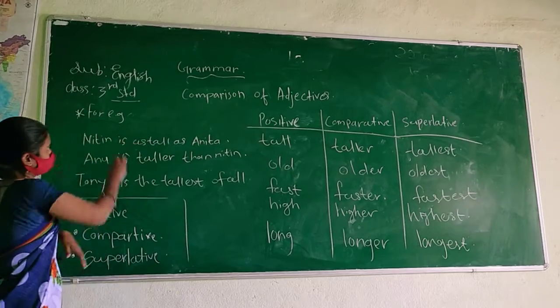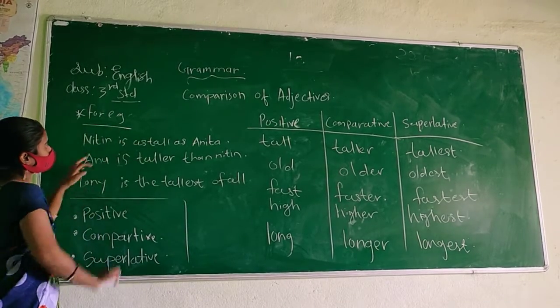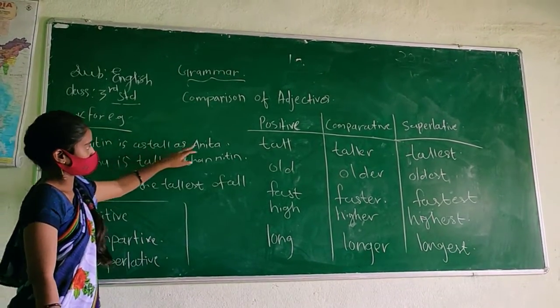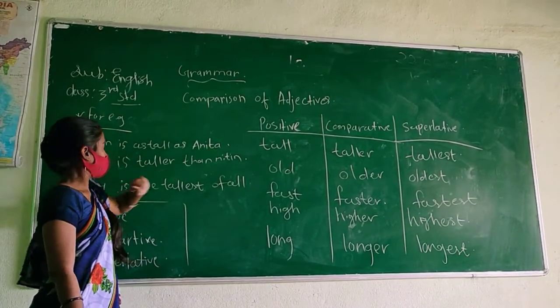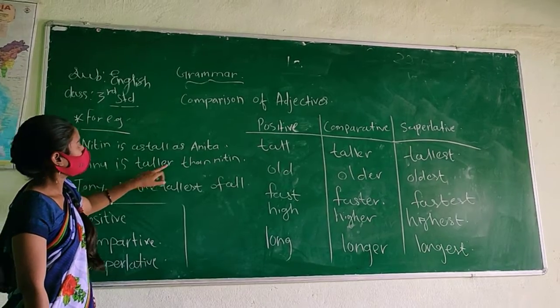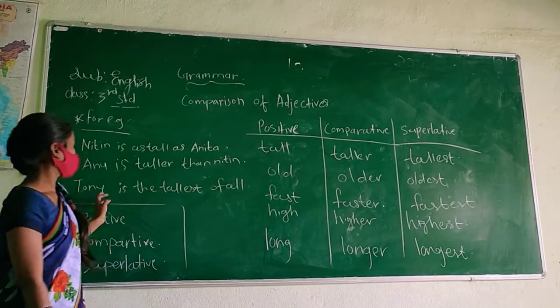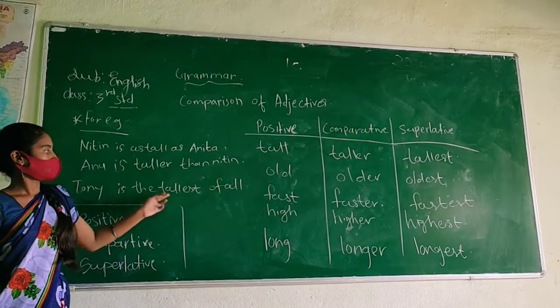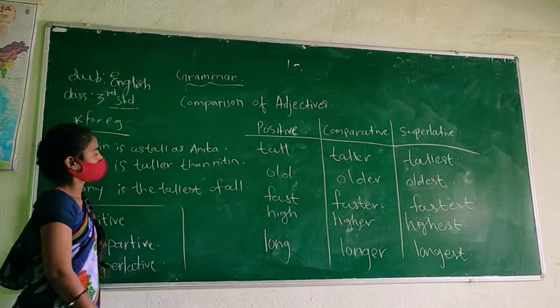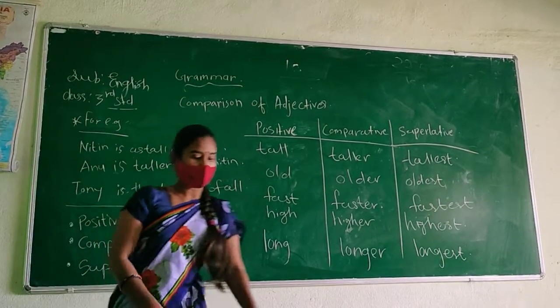There are some examples. See, Nitin is as tall as Anita. Anu is taller than Nitin. Tony is the tallest of all.